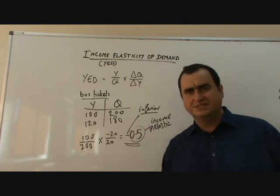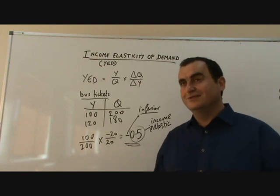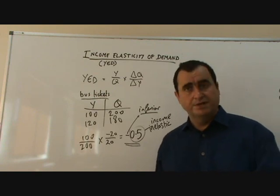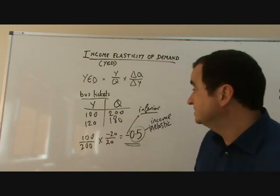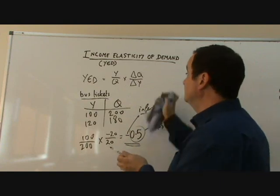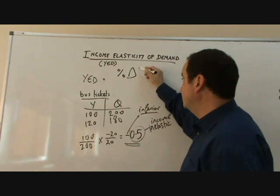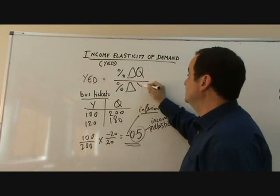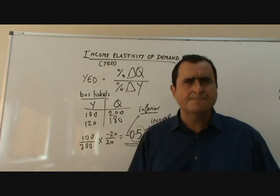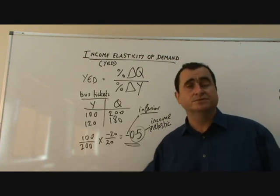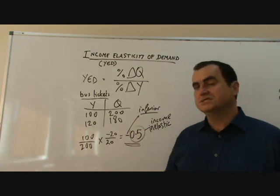The sign and the size — that's the trick with income elasticity of demand. Sign will tell you: is it normal? Is it inferior? Size will tell you the degree of elasticity — is it income elastic if it's over 1, or income inelastic? There is also another equation you may need to use: the percentage equation, which is percent change in quantity divided by percent change in income. You might be told something like, after a 10% rise in income, demand for bus tickets falls by 20%. In that case, you work with percentages, but the interpretation is exactly the same.